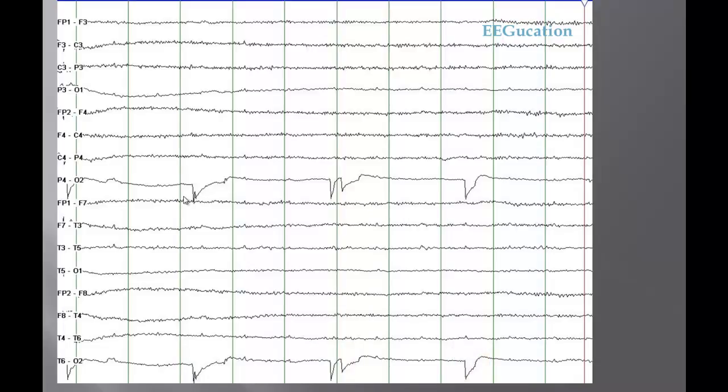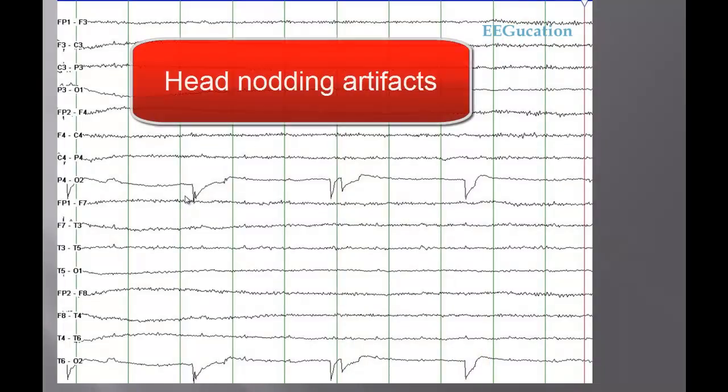Okay, so these are artifacts, these are head movement artifacts. The patient was nodding the head backwards in light sleep and was stretching the electrodes and that was creating this artifact in the occipital head region. This is not epileptiform activity, this is not even a benign EEG variant. This activity is not coming from the brain, this is just external artifact.